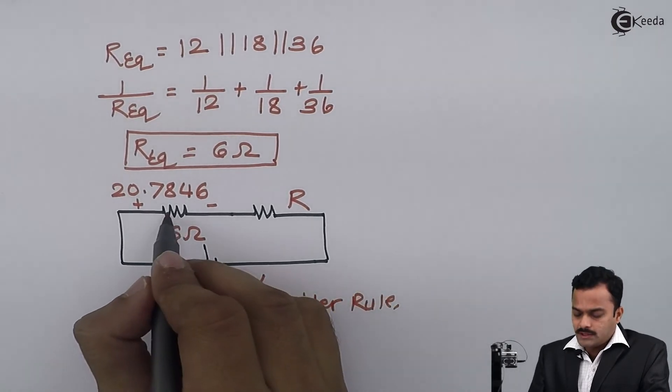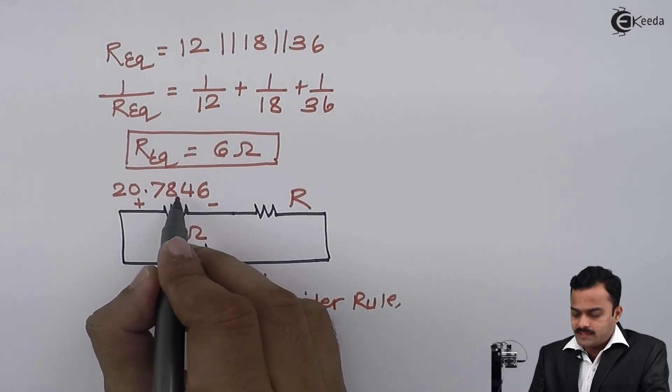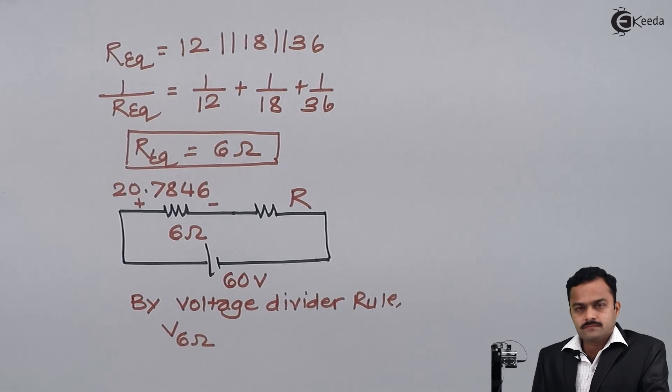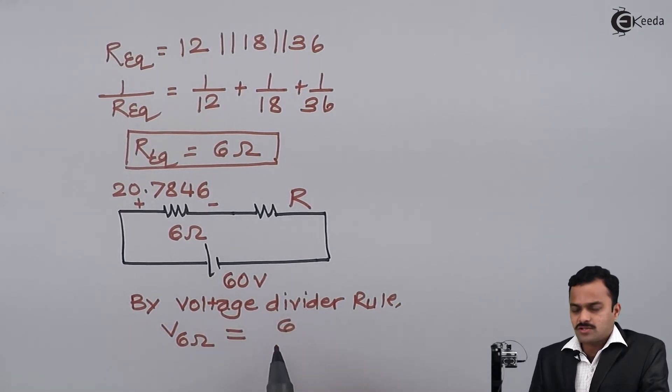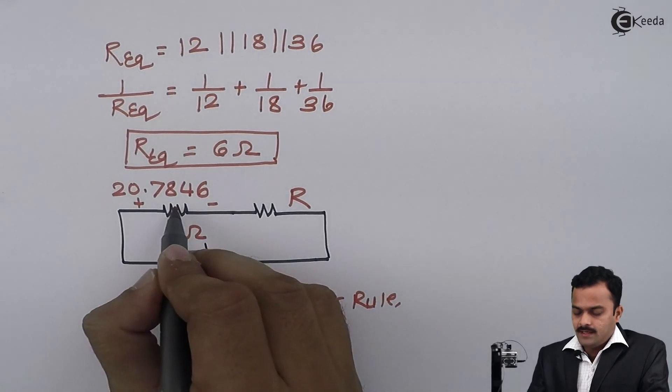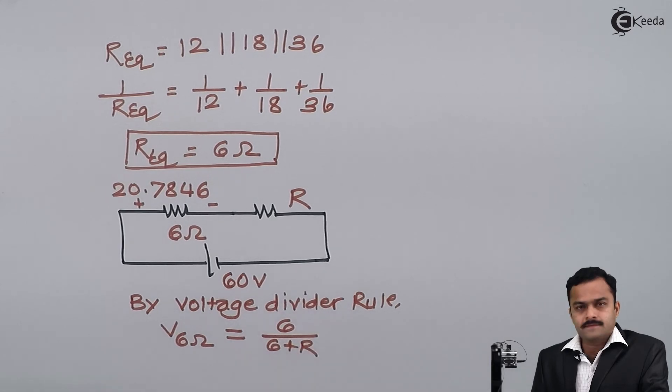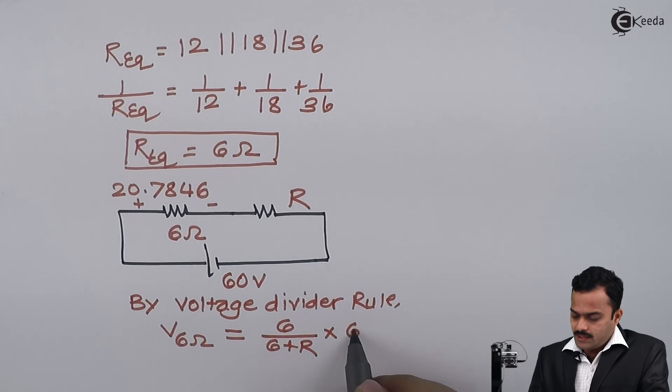I know the voltage across this 6 ohm is 20.7846, so I'll mention the voltage of 6 ohm equals 6 ohm divided by the two resistances connected in series, so 6 plus R, multiplied by total voltage, which is 60.